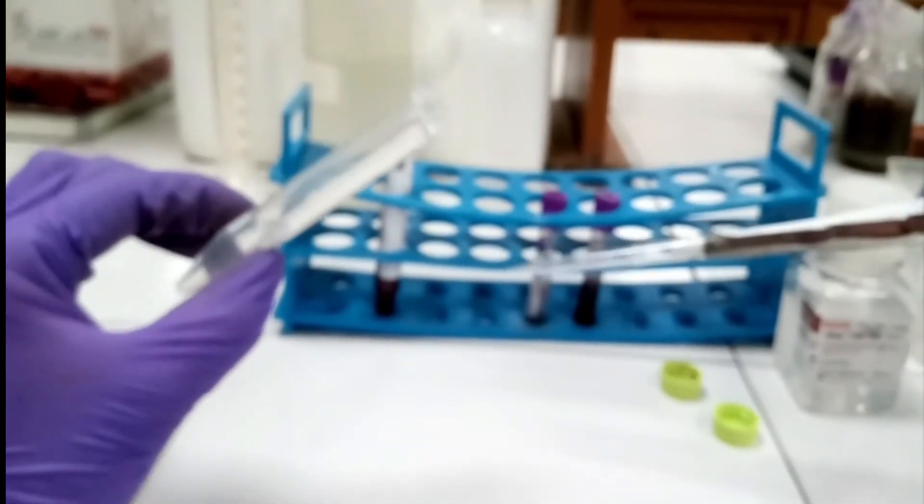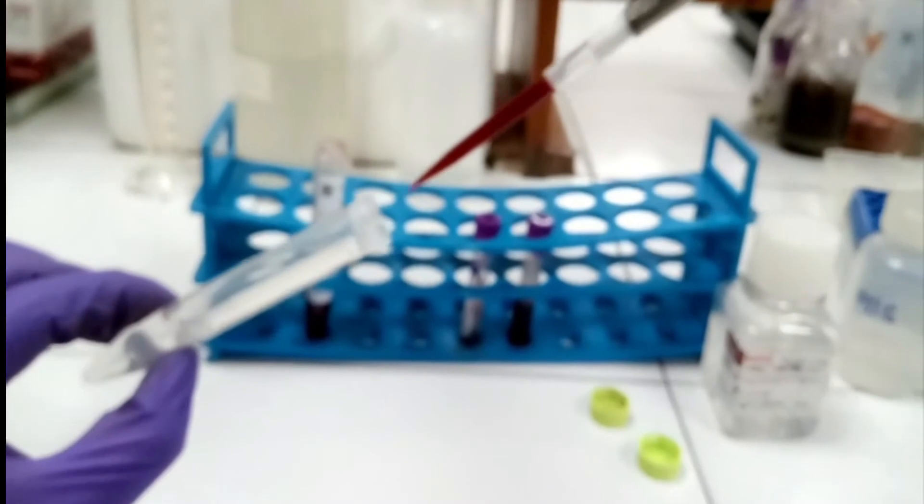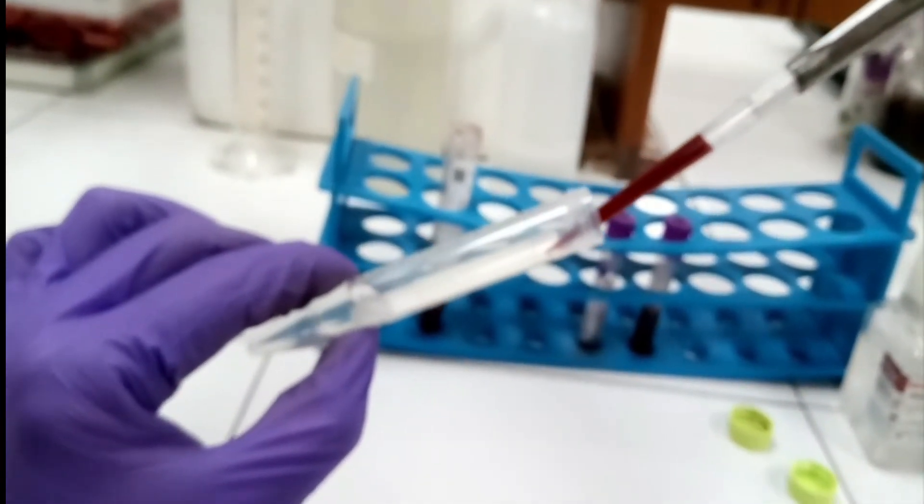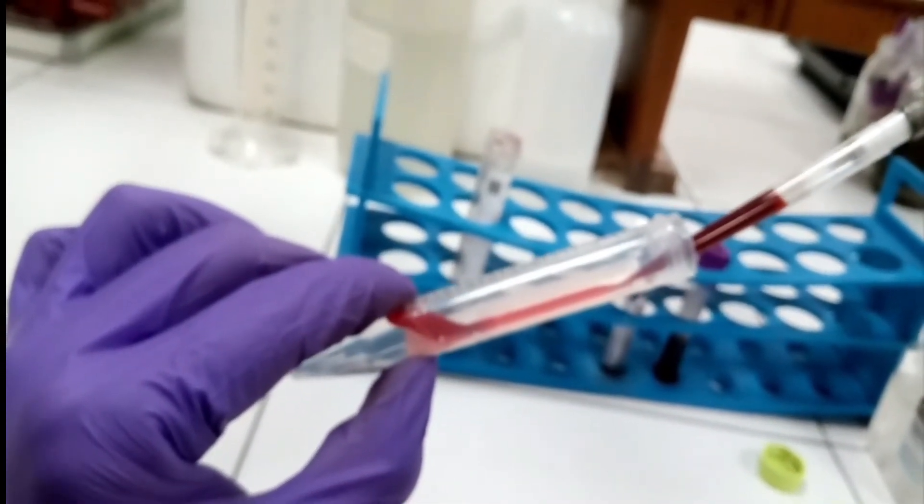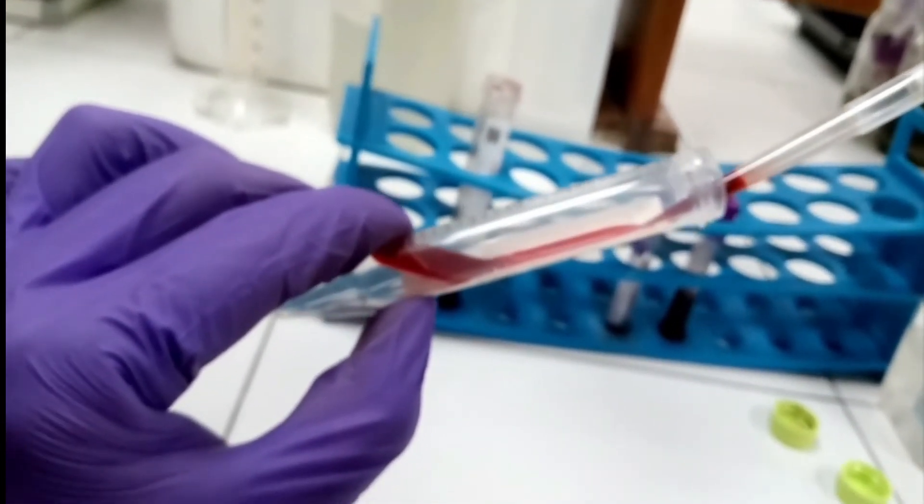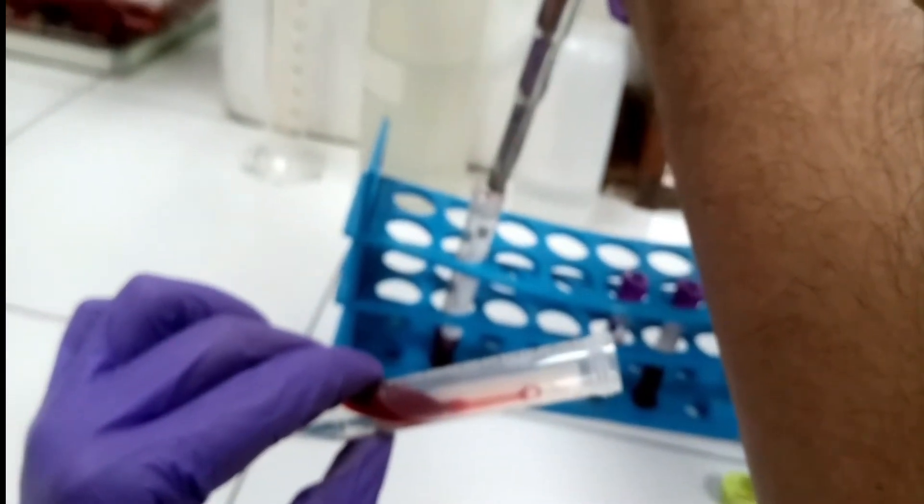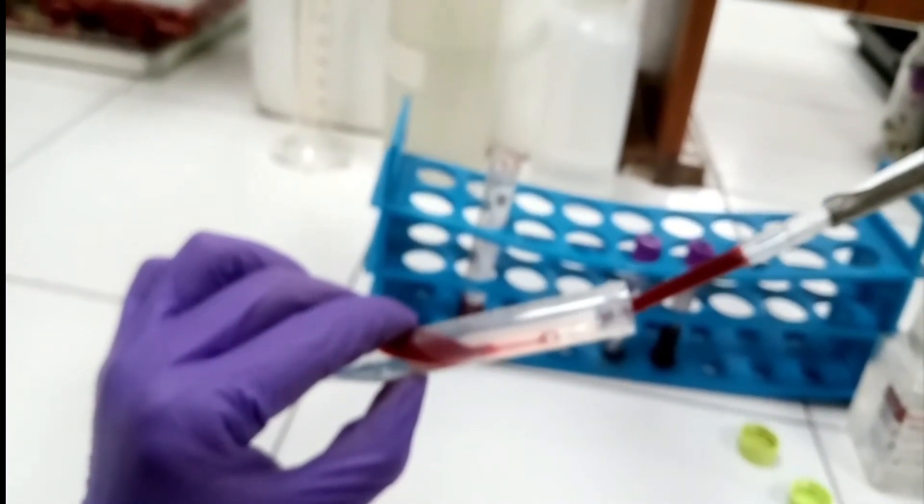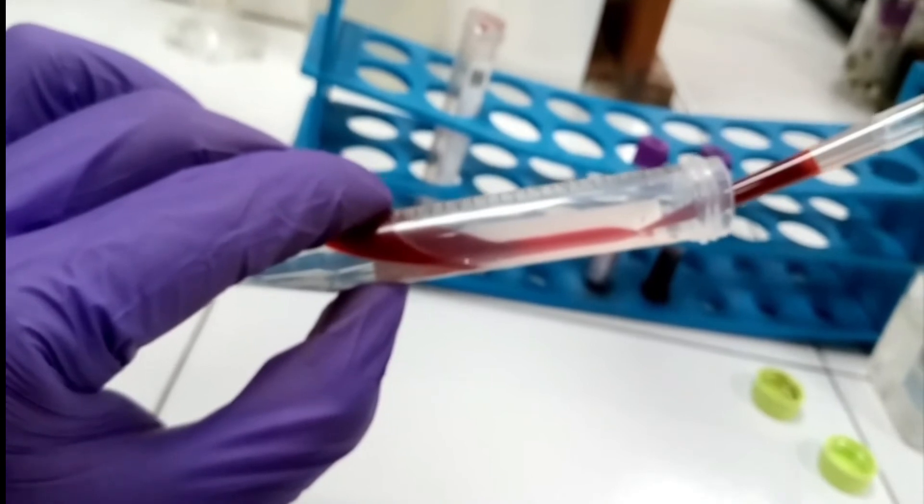The correct method is: we've already added Ficoll in this falcon. We have to tilt the falcon at about 45 degrees and then slowly and gradually add the blood from the walls of the falcon so it doesn't mix with the Ficoll. As you can see, as I'm adding blood above the Ficoll, it's not getting mixed—it's slowly forming a layer above the Ficoll. We have to add the total 4 ml of blood very carefully.